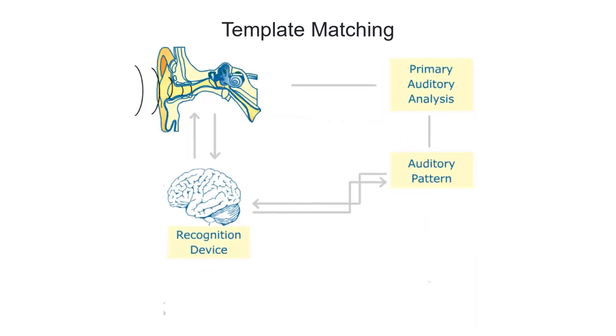First, the ear amplifies the incoming signal and transmits it to the auditory nerve. During the primary auditory analysis, the signal is filtered and non-speech components are separated from speech.